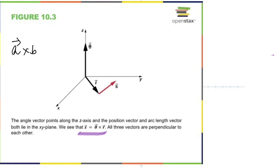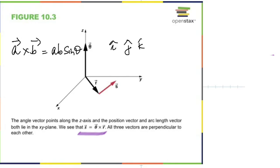So we're talking about a cross product here. We already talked about cross products when we did vectors. A cross B is defined as AB sine theta. That's where we have unit vectors I, J, K.